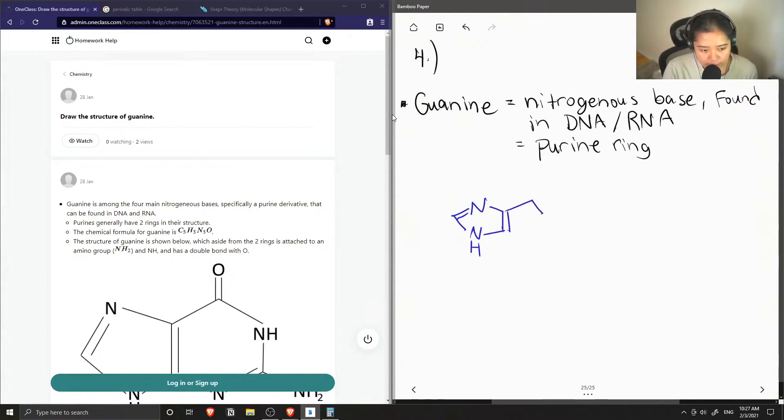And then in the second ring, we have a six-membered ring with a double bonded oxygen and another amine group on the side. So this is the structure of guanine.